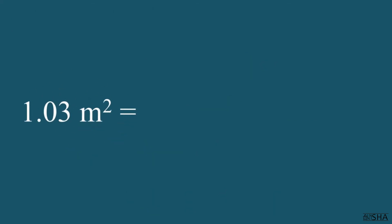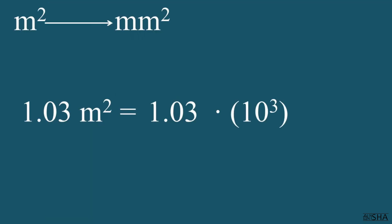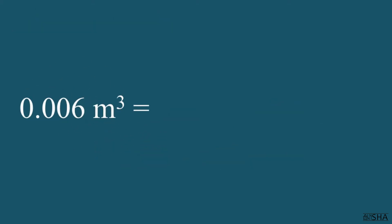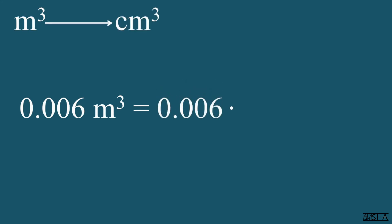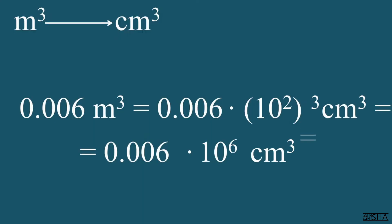Similarly, we convert square meters to square millimeters. We rewrite 1.03, change the sign of the factor's power to the opposite one, and raise the factor to the second power. We get 1.03 times 10 to the 6th power square millimeters. Let's convert cubic meters to cubic centimeters: 0.006 times 10 to the 6th power — this is the factor of the prefix centi with the changed sign of power, then raised to a cube. In standard form, it will be 6 times 10 to the 3rd power cubic centimeters.